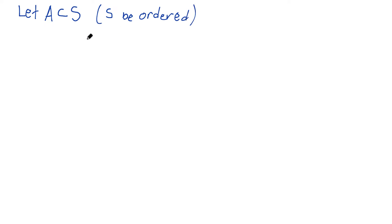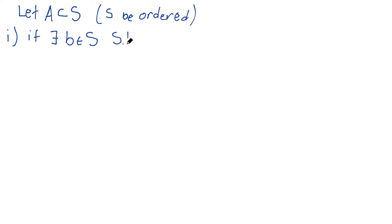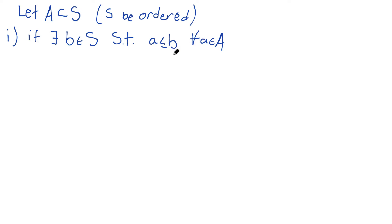Now we're going to talk about being bounded above and an upper bound. If there exists some element — I'll call it B for bound — some B in S such that (using ST for 'such that') little a is less than or equal to B for every single element a in the subset A. Basically, anything you pull out of capital A, any element, is less than or equal to this other element.